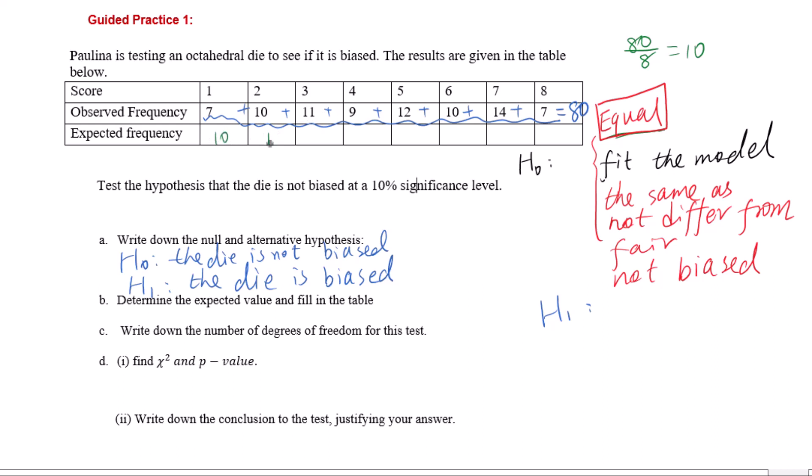Write down the number of degrees of freedom for this test. DF equals n minus 1, so with 8 data points, 8 minus 1 equals 7.